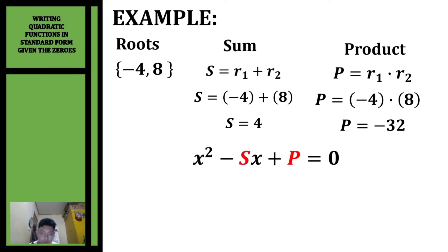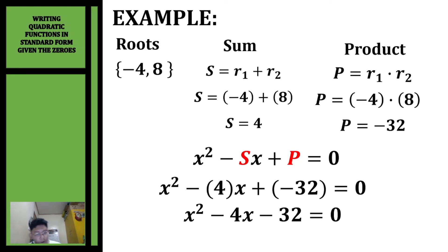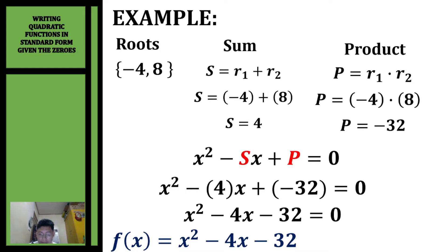Using the formula x squared minus sx plus p equals zero, we substitute the values of s and p: x squared minus 4x plus negative 32 equals zero. Simplifying, we get x squared minus 4x minus 32 equals zero. In function form, we change 0 to function notation: f(x) = x² - 4x - 32.